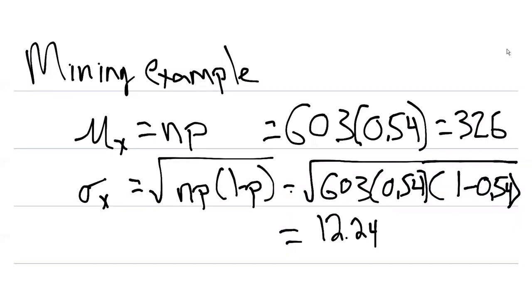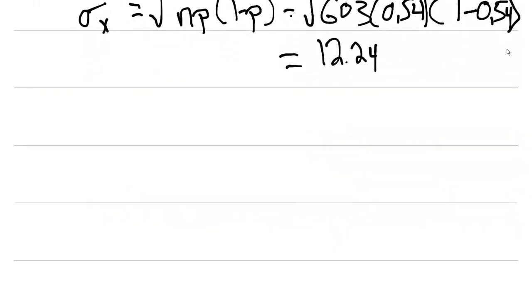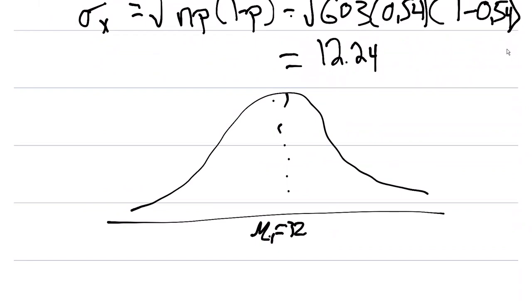So we've got some parameters now for our mining example and we're going to go back to the z table for the binomial approximation to the normal. Remember what the z distribution looks like. Let's just draw it. Our mean value would be where μ sub x is 326.